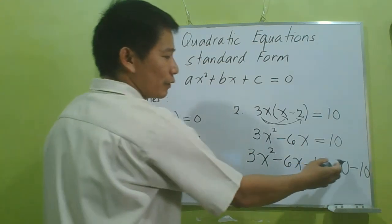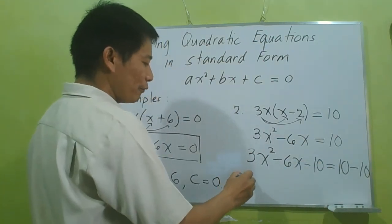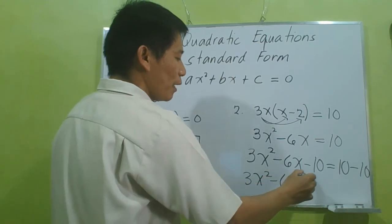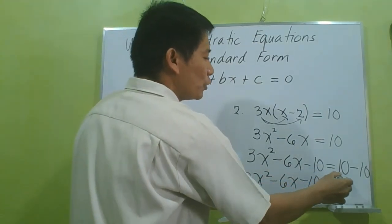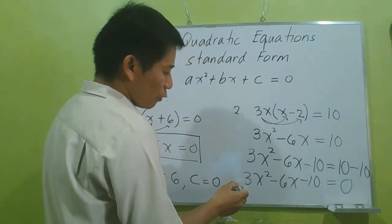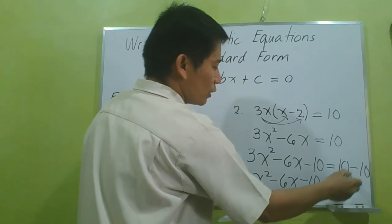Now, simplifying the right side, we will have 3x² - 6x - 10 is now equal to 0, because 10 minus 10 is now 0. Now observe our resulting equation—it is now in the standard form.